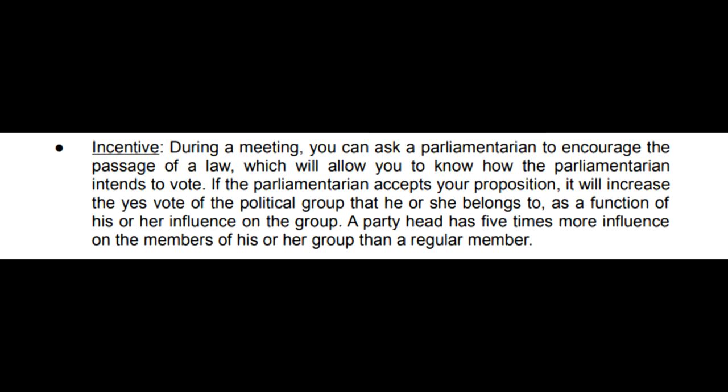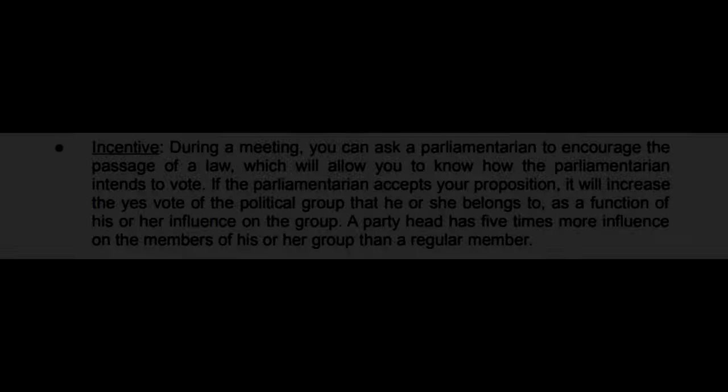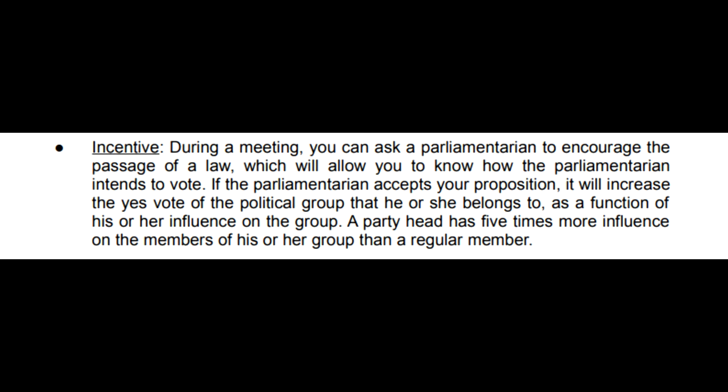There are also many ways for you to influence votes in parliament. The first one is incentive. During a meeting, you can ask a parliamentarian to encourage the passage of such a law, which will allow you to know how the parliamentarian intends to vote. If the parliamentarian accepts your proposition, it will increase the yes vote of the political group that he or she belongs to, as a function of his or her influence on the group. This can be found here with the god and spy tool. A party head has five times more influence on the members of his or her group than a regular member.